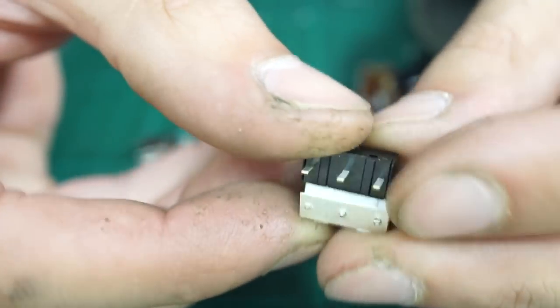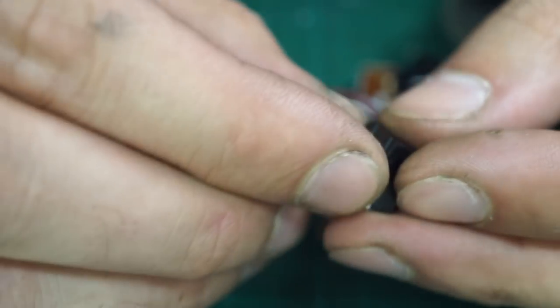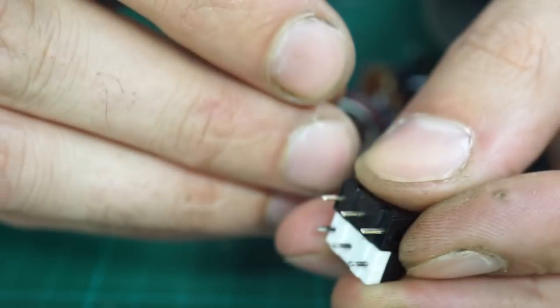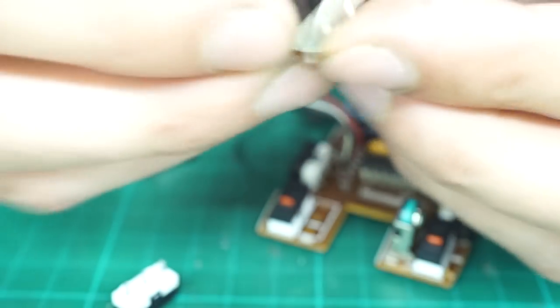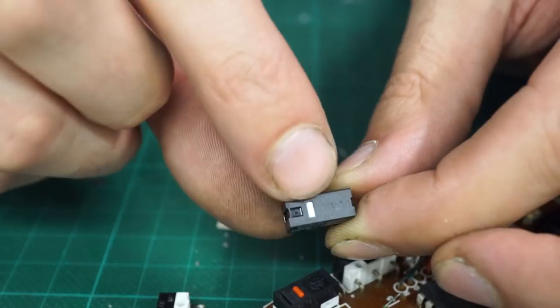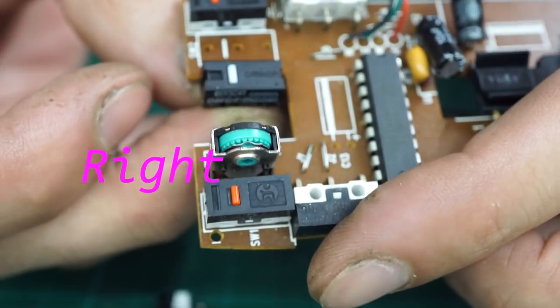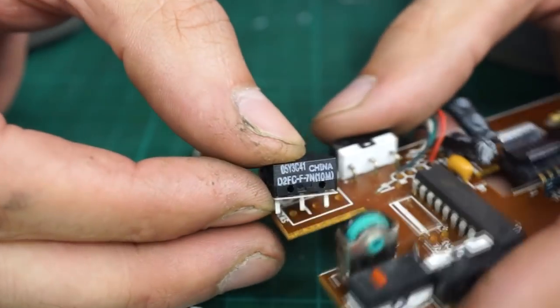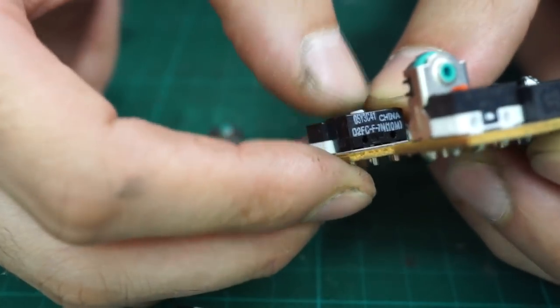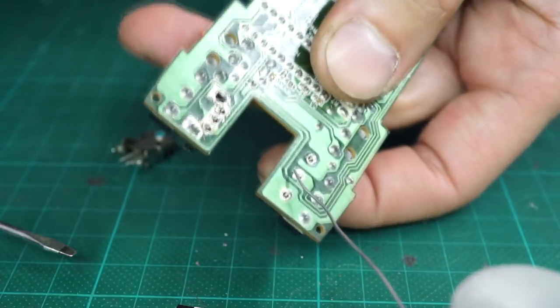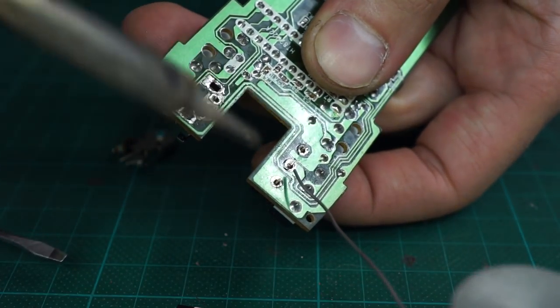Now I'll solder the new switch back to its place, but first I install the washer from the old switch to get proper height of the button. This line on the circuit shows us where the switch button should be. If there's a washer don't forget it, then just install the switch on its place, push it with your fingers and solder at least one of the legs so the switch holds in place.